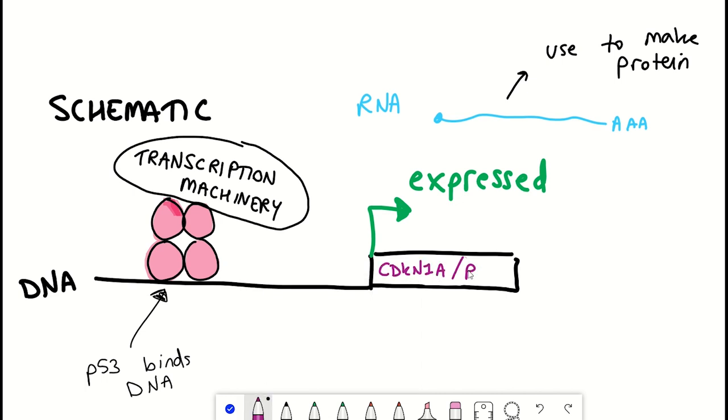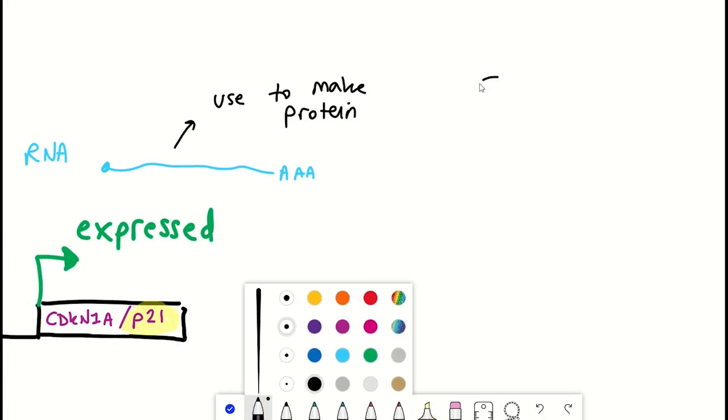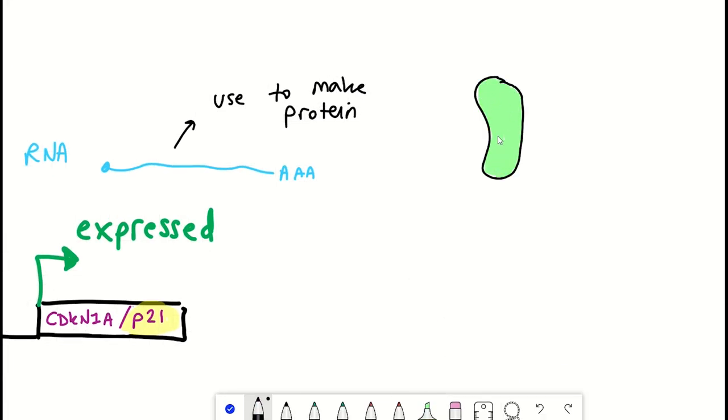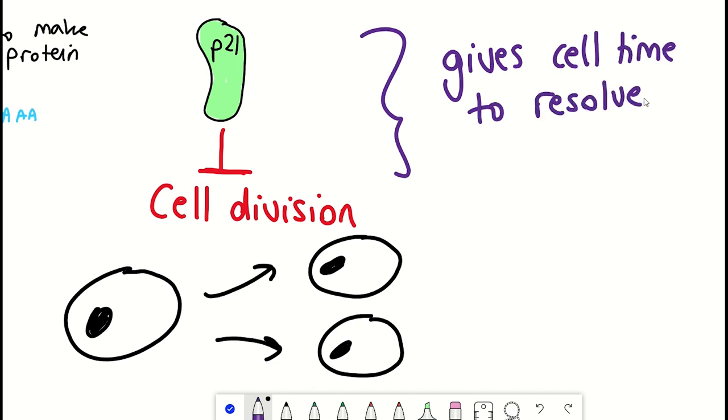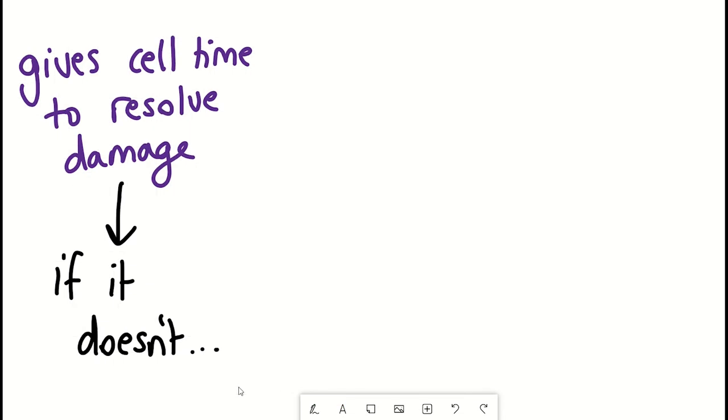One of the most famous targets of p53 is the gene encoding the protein p21. p21 is a protein that can stop a cell from replicating. This is thought to be beneficial under stress, as it gives the cell time to try and resolve the stress. If the stress isn't resolved, then the cell may transition into cellular senescence.